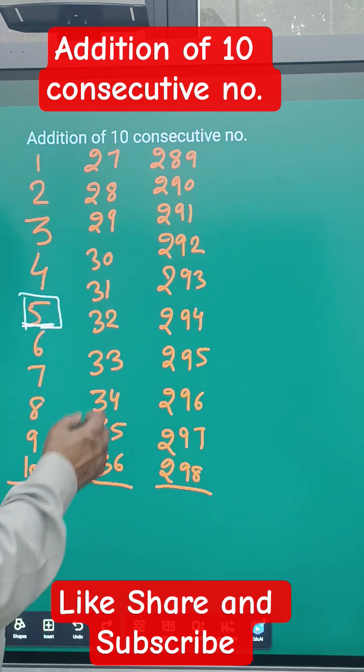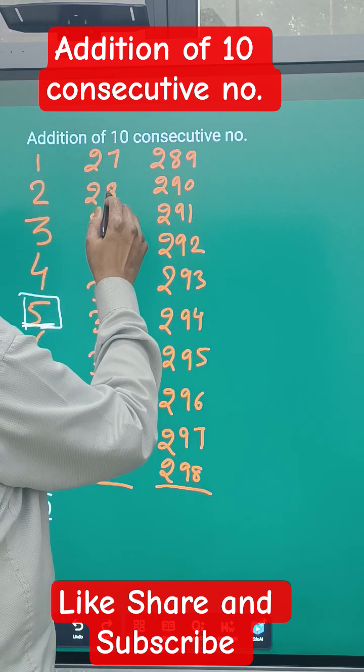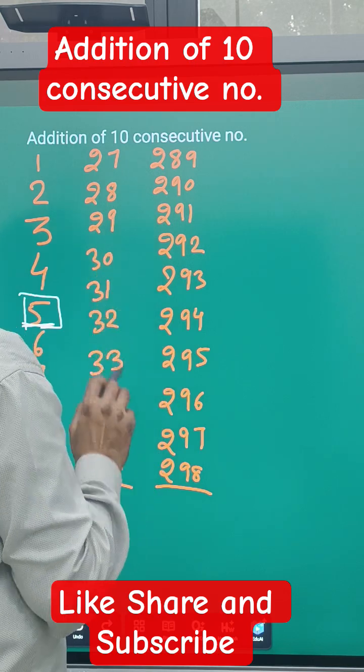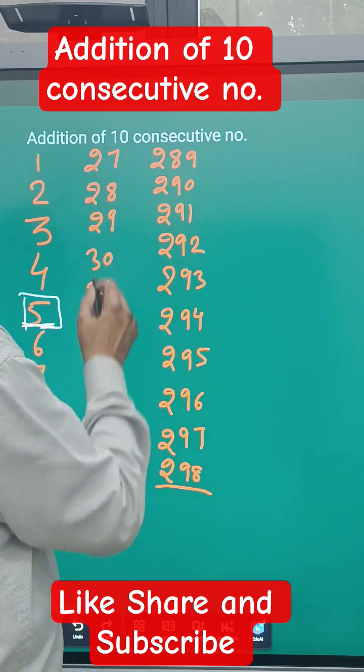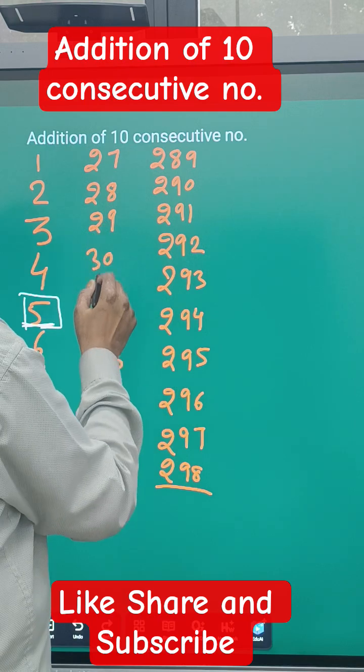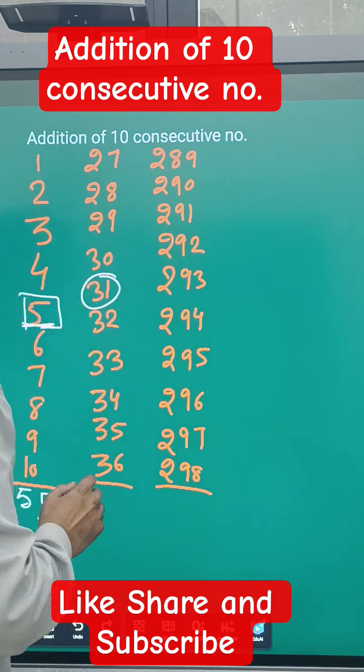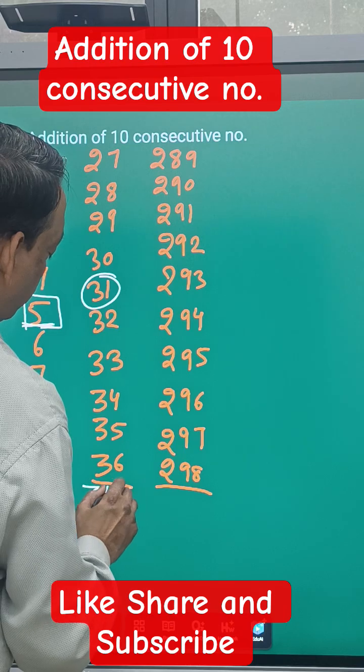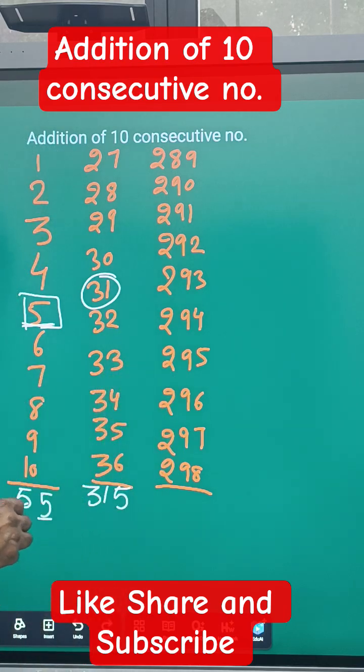The same way here: 27, 28, 29, 30, 31. There are 10 consecutive numbers given. Count one, two, three, four, five - the fifth number is 31, and then just put the 5 after that.